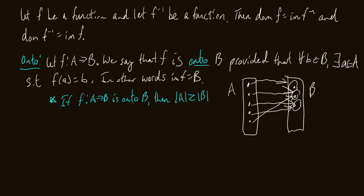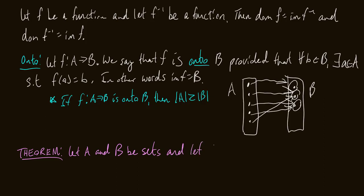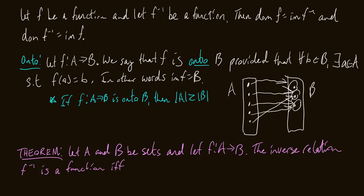Now for a quick theorem — quick because I'm not going to prove it. Let A and B be sets and let f be a function mapping A to B. The inverse relation f inverse is a function mapping B to A if and only if f is onto and one-to-one.